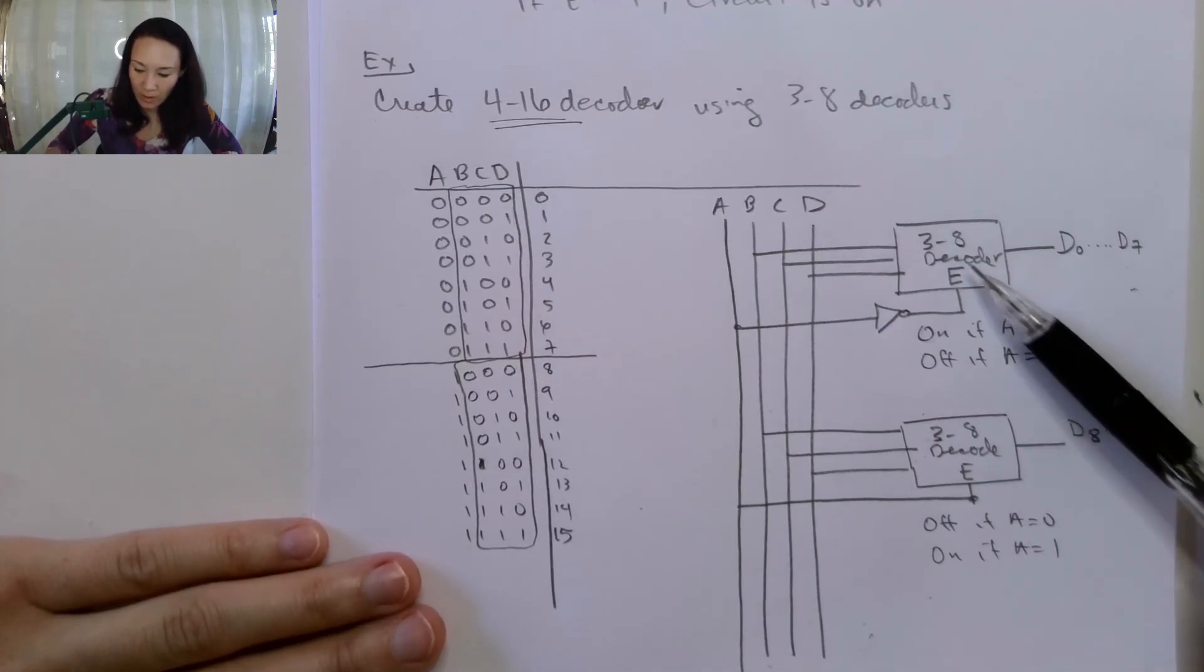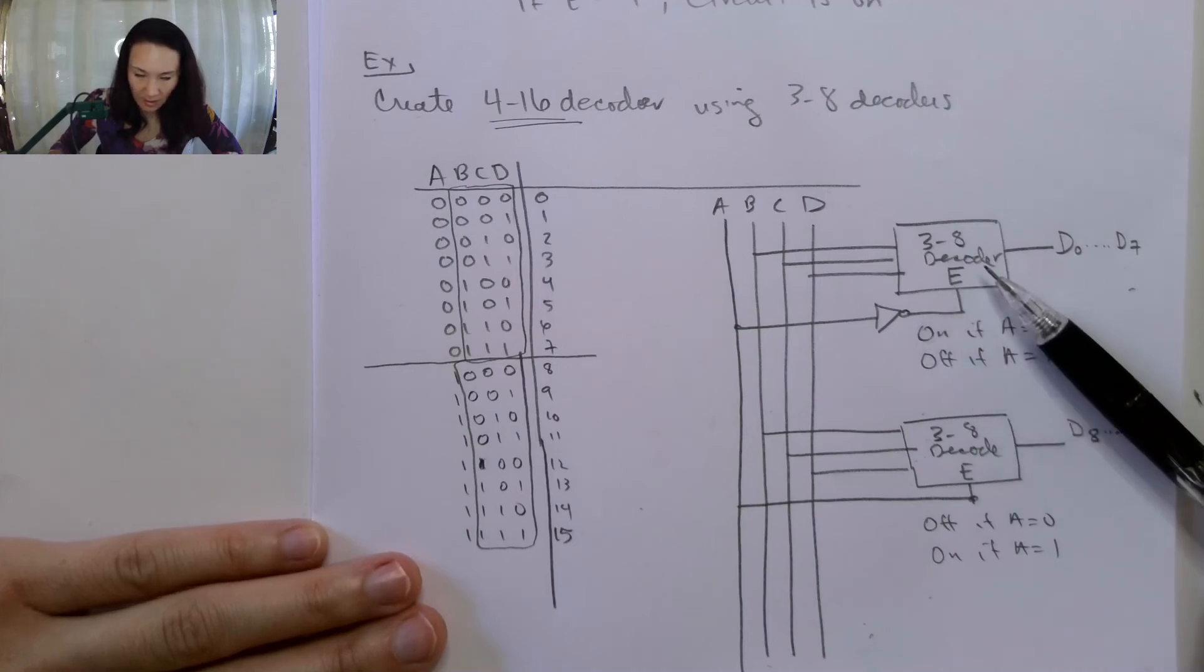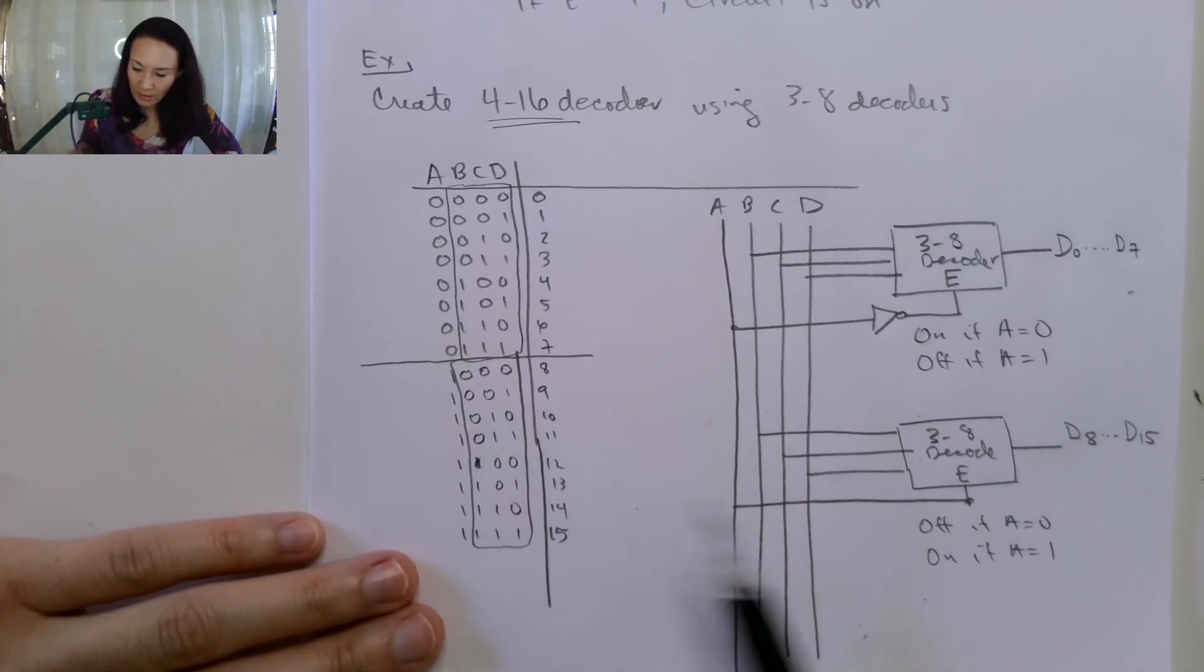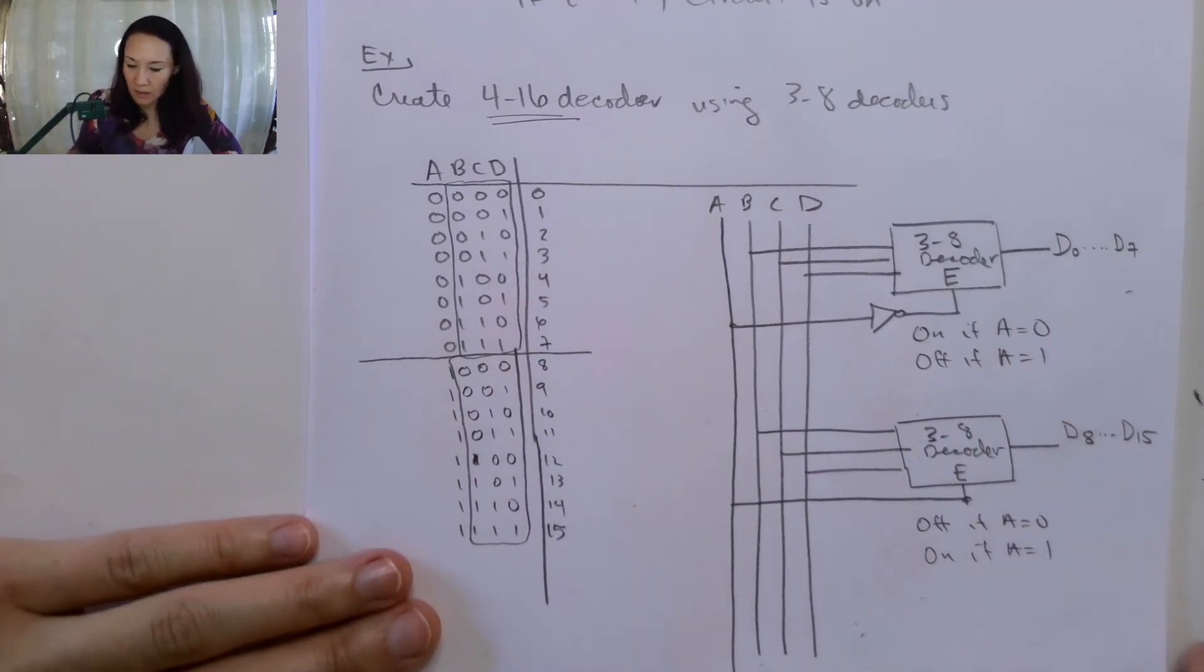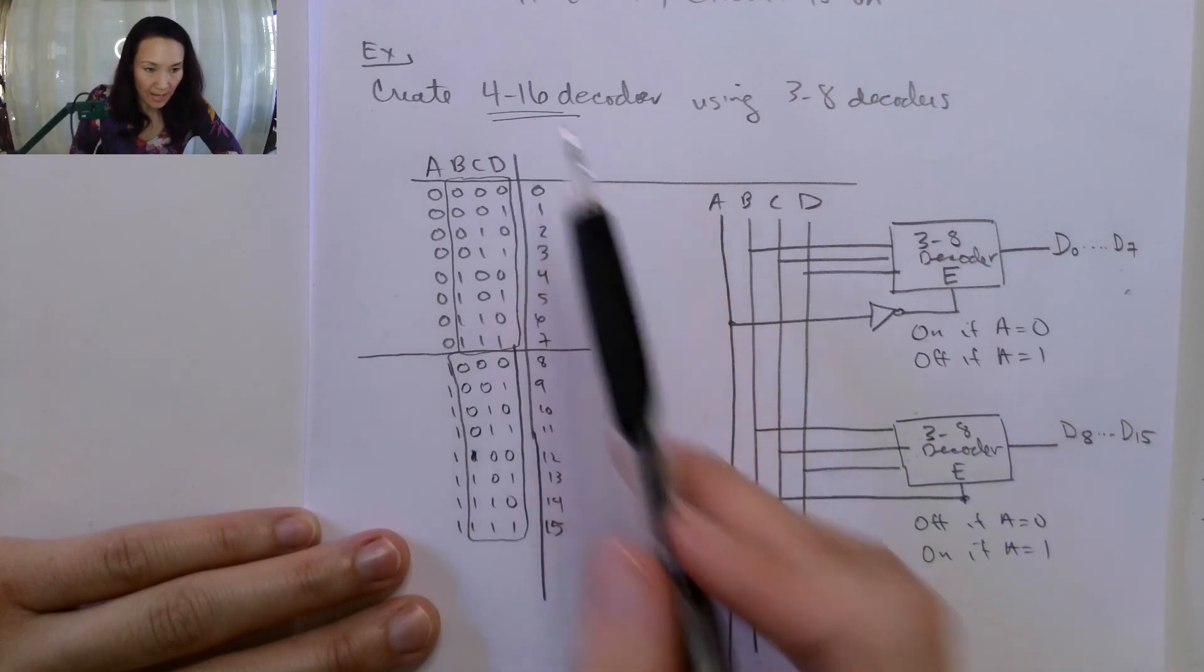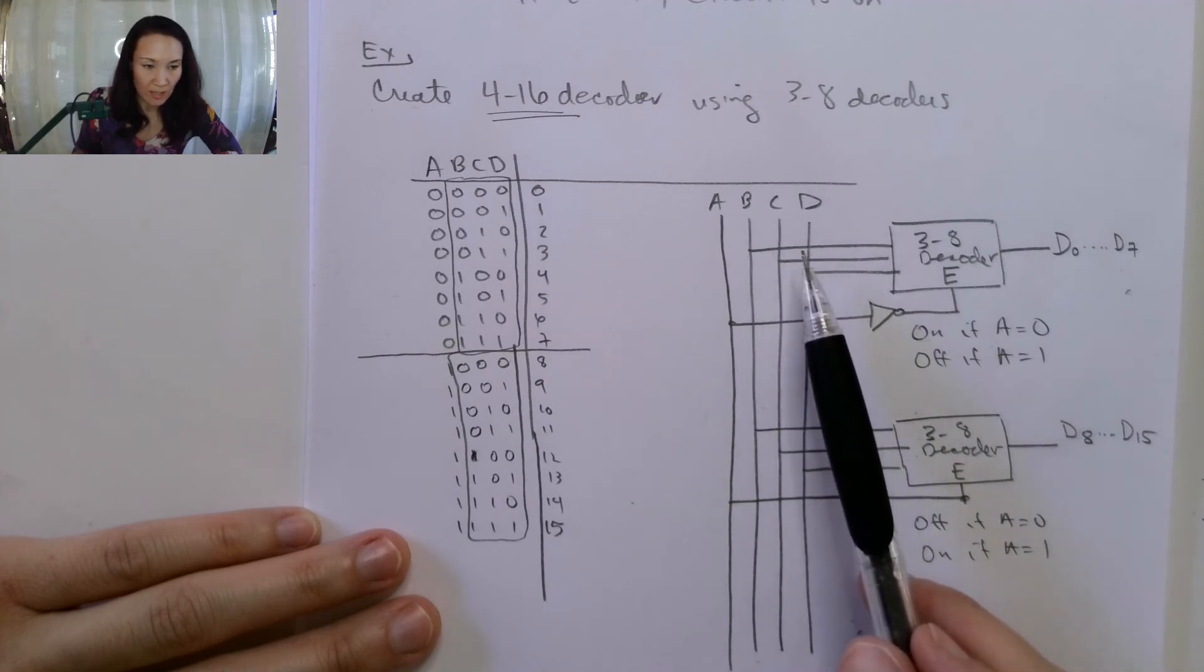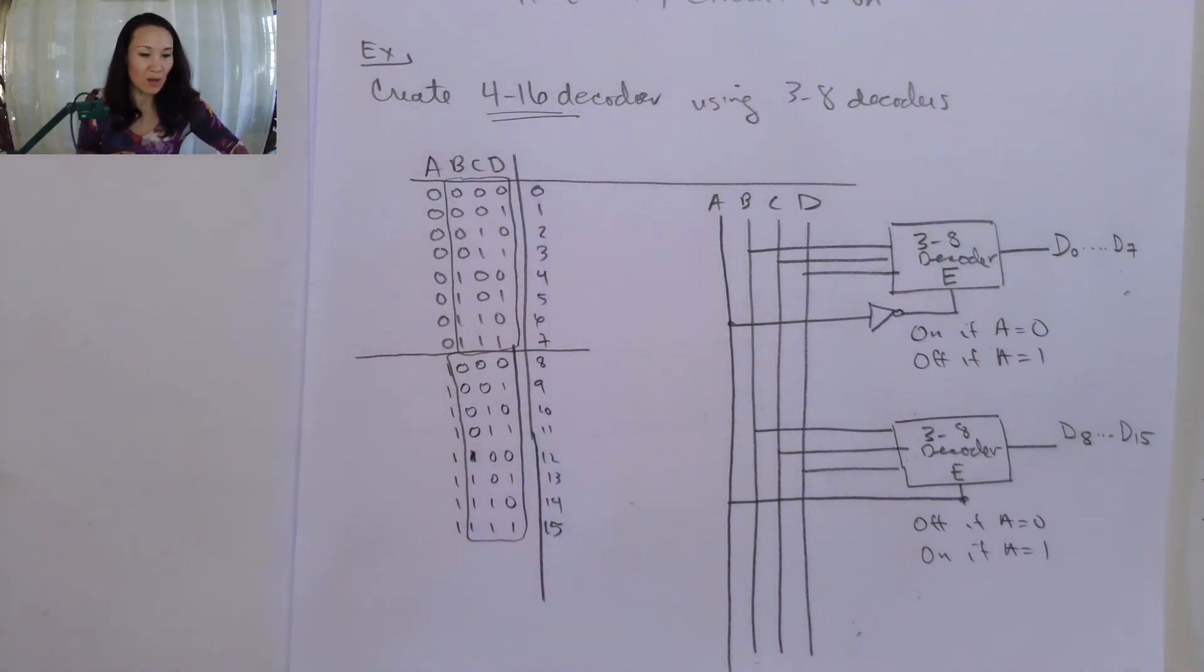But the way we route it is we have this enable line. This is basically an opposite enable, and this is a positive enable. Let me know if you have questions about how to use decoders to make larger decoders from smaller ones. In the next example, I'm going to have you try this, but instead of a 4-to-16, we'll have you try a 3-to-8. It'll be a similar process with 3 input bits instead of 4, basically the same process.